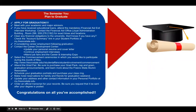The semester you plan to graduate: apply for graduation. Be sure to submit your graduation application during the filing period, which is usually at the start of the semester in which you intend to complete all degree requirements. Meet with your academic advisor. If you have received educational loans, attend the mandatory financial aid exit interview workshop and contact the financial aid office. Clear any financial obligations to the university — check the account summary link in your student portal at myfresnostate.edu. If considering career employment following graduation, update your personal resume and cover letter, continue employment interviews, attend job fairs, and select the commencement ceremonies in which you would like to participate during the month of May. Attend the grad fair and be sure to purchase your grad pack — cap and gown, graduation announcements — and learn more about the Fresno State Alumni Association.